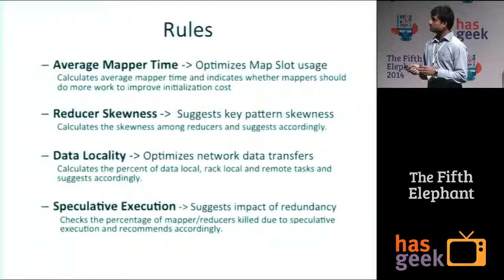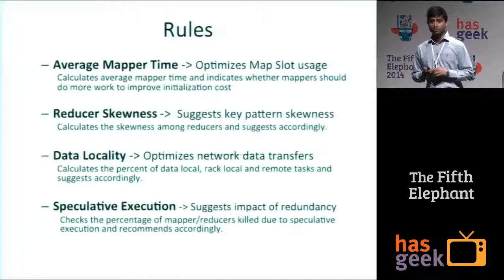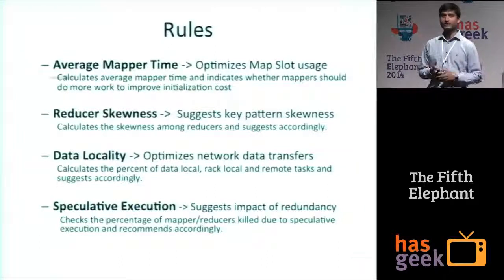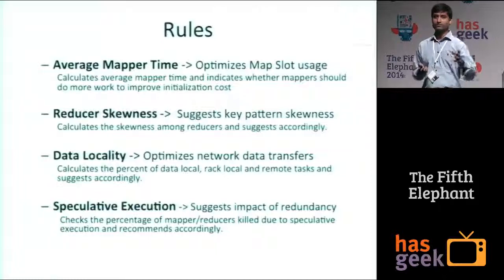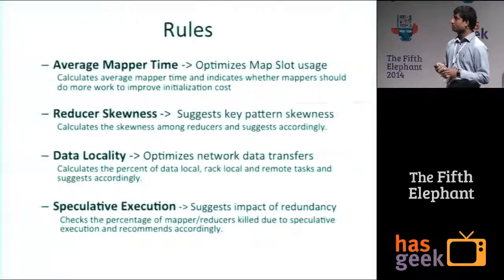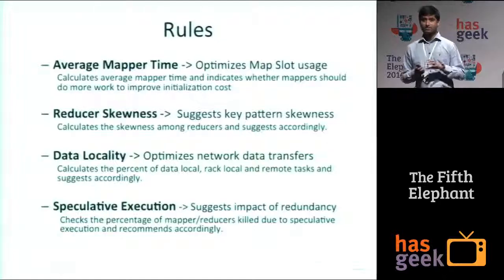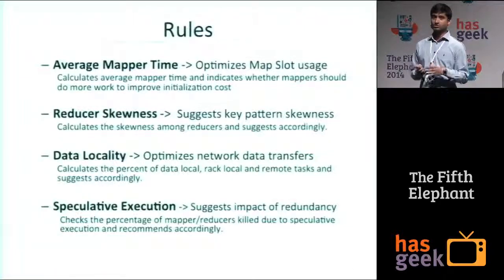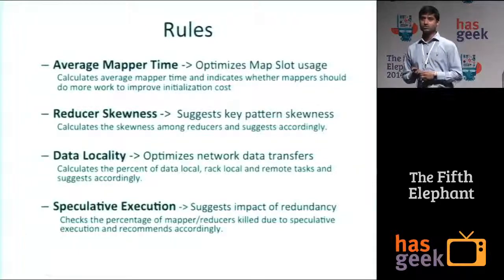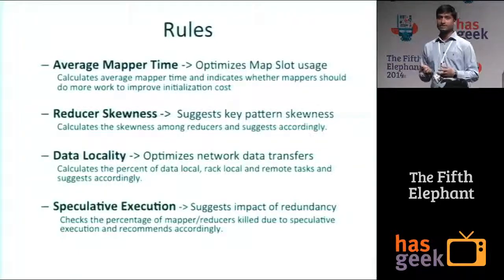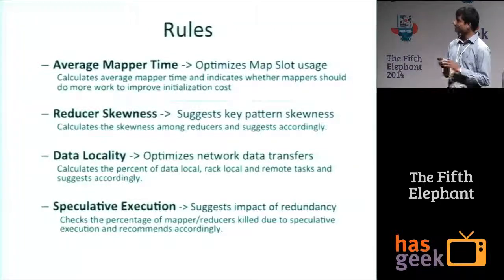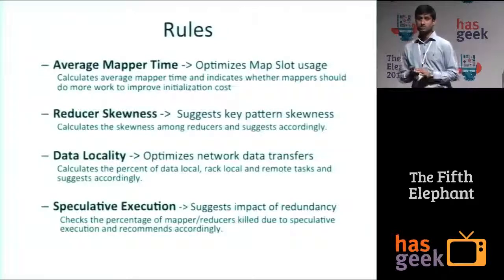The reducer skewness rule is more about the key pattern that your MapReduce job is working on. One reducer might get a lot of data while others do not. This rule calculates whether there is a skew, and it suggests you work on the key pattern. It doesn't give you the exact solution, but it tells you there is a skewness.